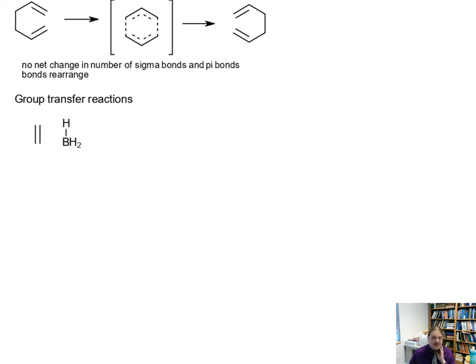A final kind of reaction is a group transfer reaction. A reaction that is kind of like this is the hydroboration reaction that you may have already learned about. This reaction is a pericyclic reaction. It has a cyclic transition state. All of the bond forming and bond breaking happens at the same time—it is concerted.